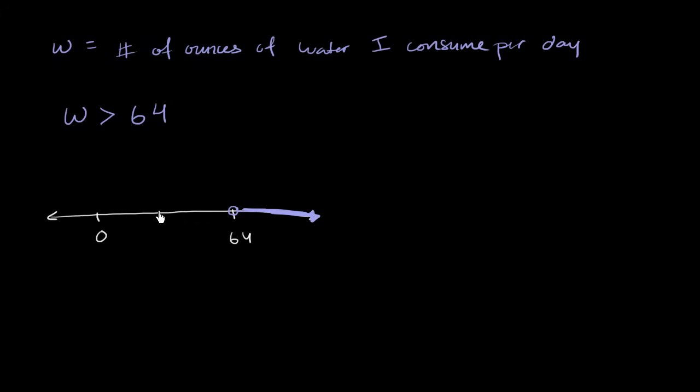Now what if I want to loosen things a little bit? I was like, OK, it's OK if I drink exactly 64 ounces or more. Well, then I could write W is greater than or equal to 64.